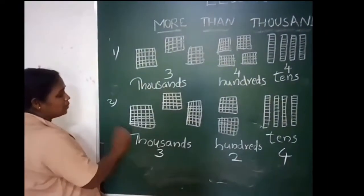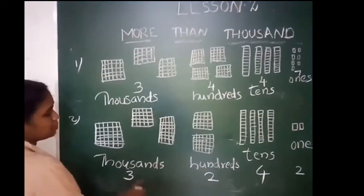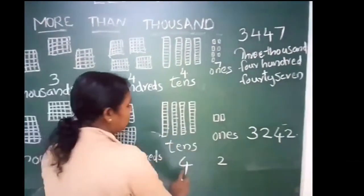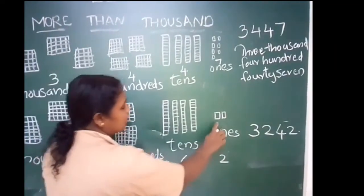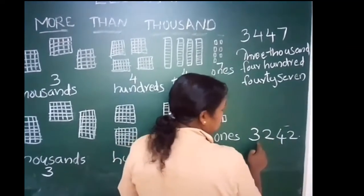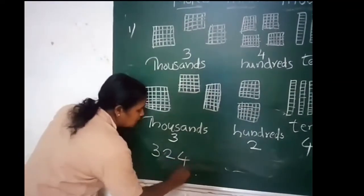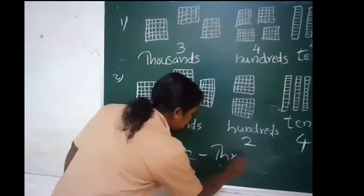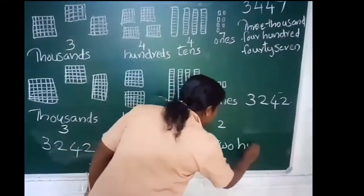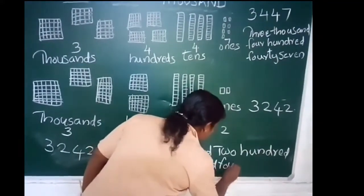We can do a 100 more activity. Here you can see 3000, and a 200s box, and 4 tens box, and 2 ones box. So we can write it as 3,242. The number name is three thousand, two hundred and forty-two.